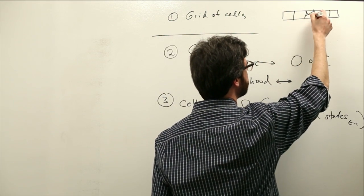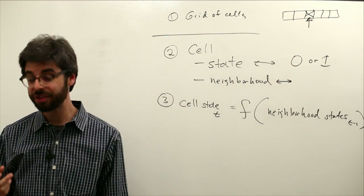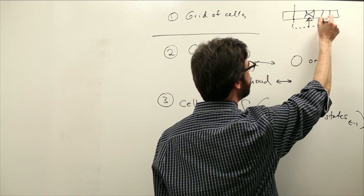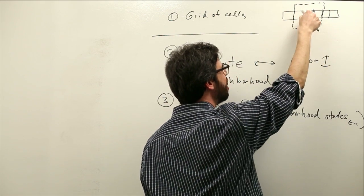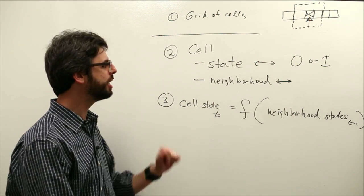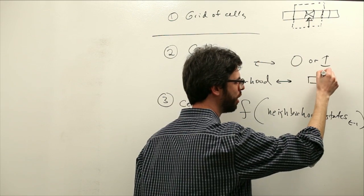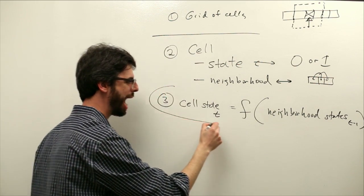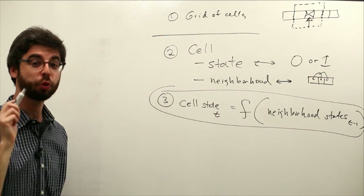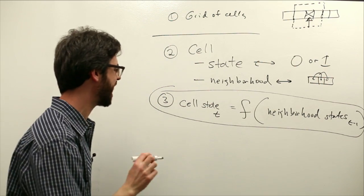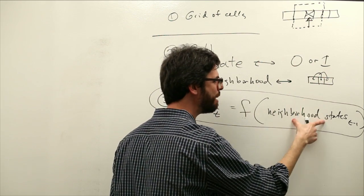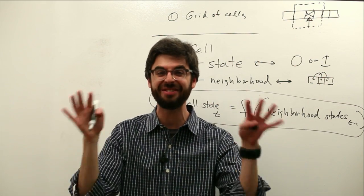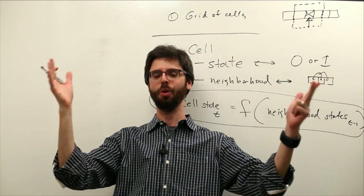Now we have a slightly more interesting question: what is the simplest possible neighborhood? The simplest possible neighborhood is the three adjacent cells — the cell and its neighbor to the left and to the right. So if this is the simplest possible neighborhood, one cell with its left and right neighbors, we have to ask how do we write the rules for the elementary CA, where the cell state is a function of its neighboring states in the previous generation. We need to walk through these rules, define them, and see how they're implemented in code.